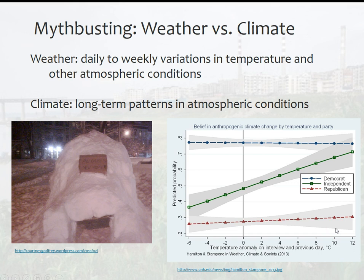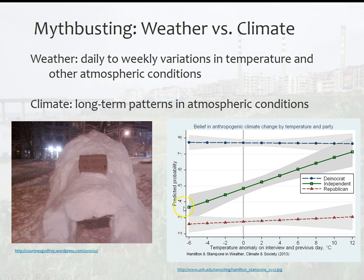Among the data they gathered was whether respondents identified as Democrat, Independent, or Republican. This is your Republican line, this is your Independent line, and this is your Democrat line. They asked whether or not people thought that humans were impacting the climate. Low on the scale means people didn't think humans were impacting the climate; high on the scale means people believed they are.